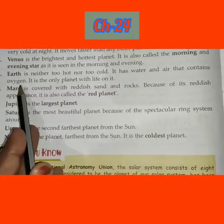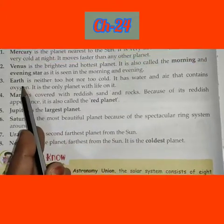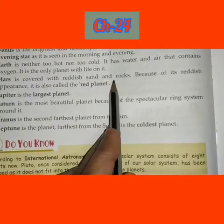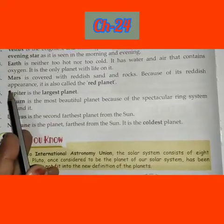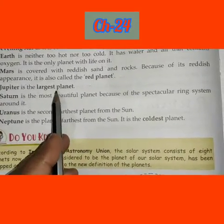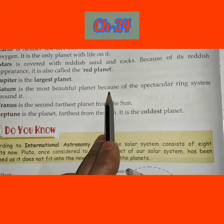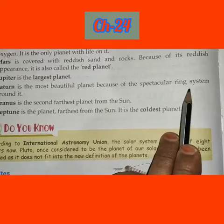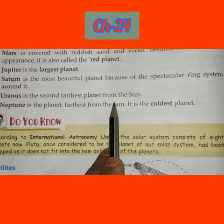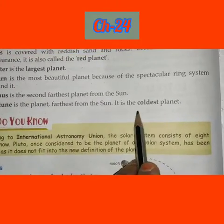Earth is the only planet with life on it and is called the blue planet. Mars is covered with reddish sand and rocks, so it is called the red planet. Jupiter is the largest planet. Saturn is the most beautiful planet because of the spectacular ring system around it. Uranus is the second farthest planet from the sun.